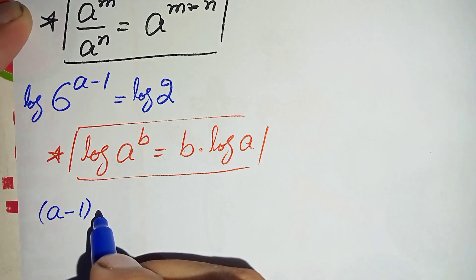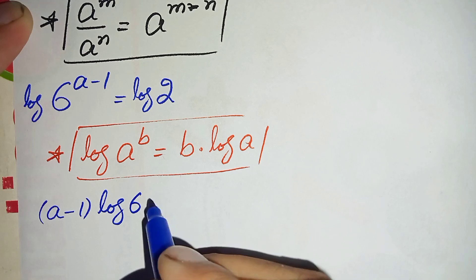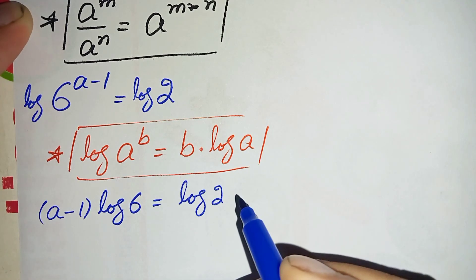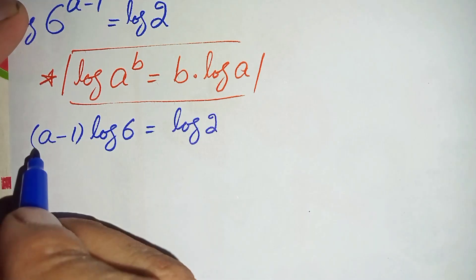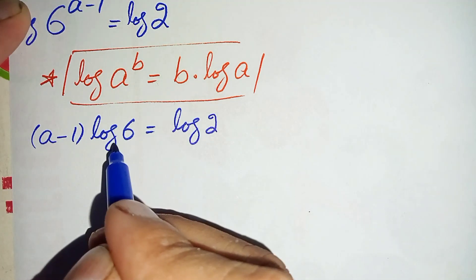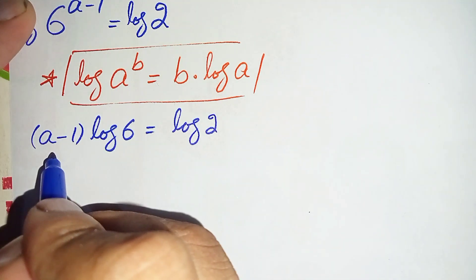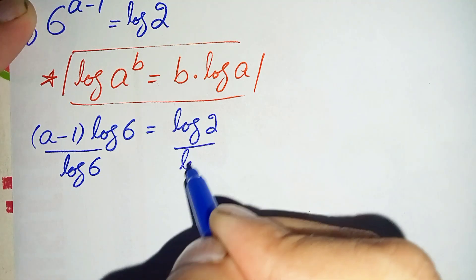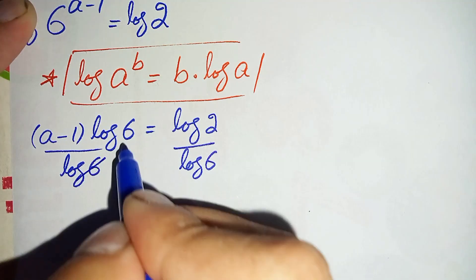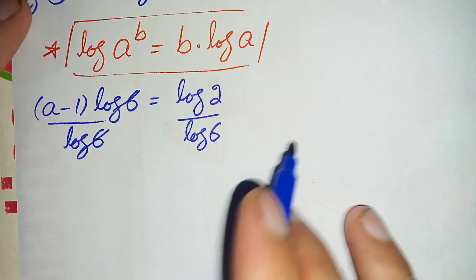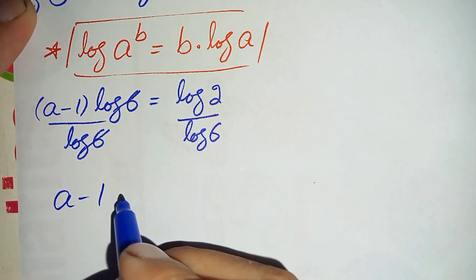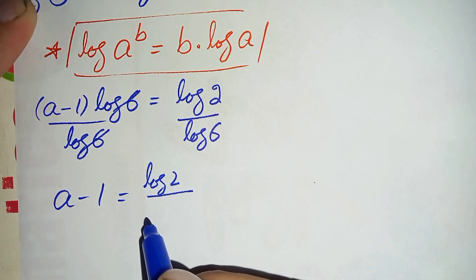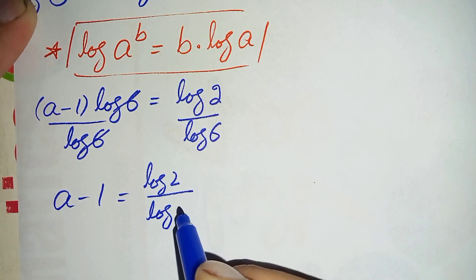This gives us (a minus 1) times log of 6 is equal to log of 2. Since we need to find the value of a, we divide both sides by log of 6 to eliminate it from the left hand side. The log 6 terms cancel, leaving a minus 1 on the left, and log of 2 divided by log of 6 on the right.